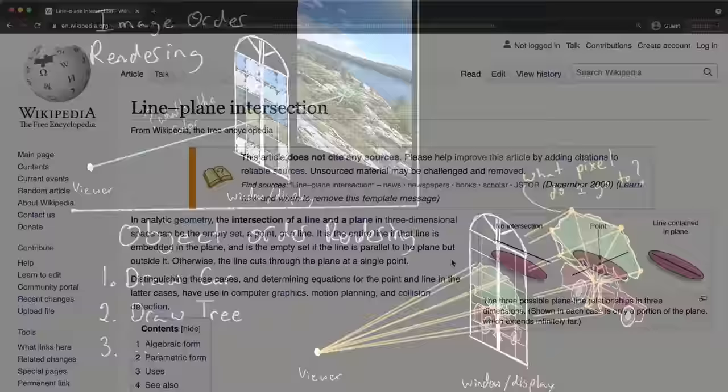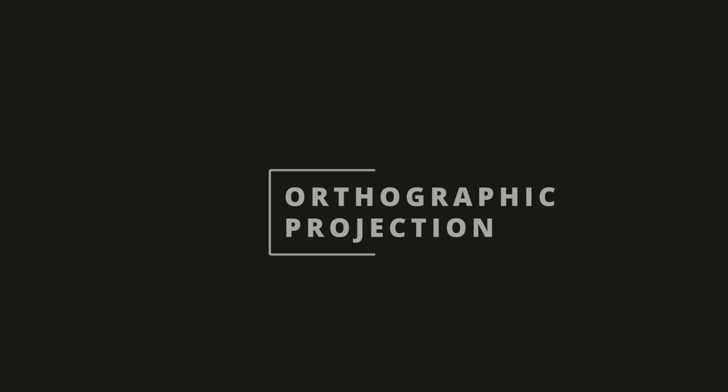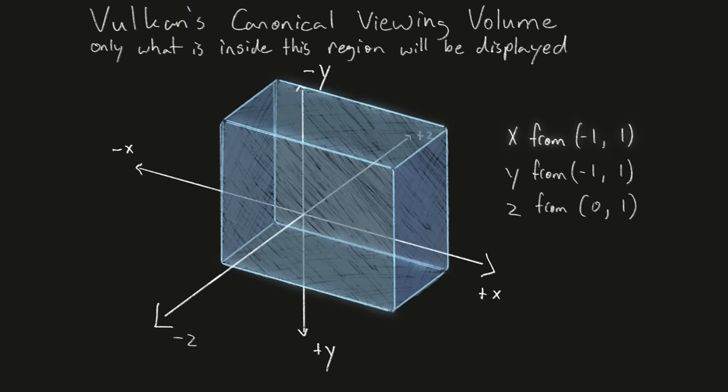But a much more effective way to do this is with a matrix transformation. First though, I want to start by explaining orthographic projection. In the previous tutorial, I talked about Vulkan's canonical viewing volume. Only the objects that are within this 2x2x1 region will be displayed. Note that the positive y-axis points down, and positive z-axis points into the screen.